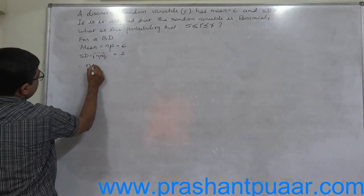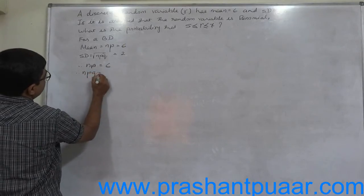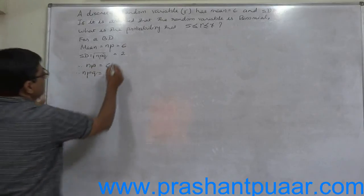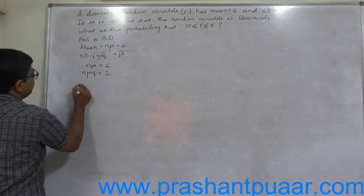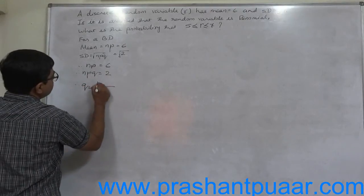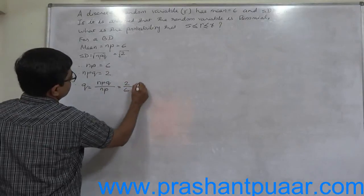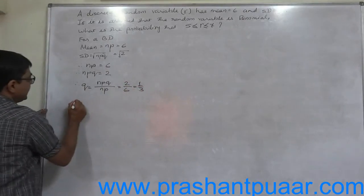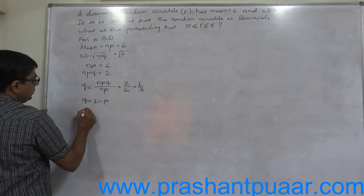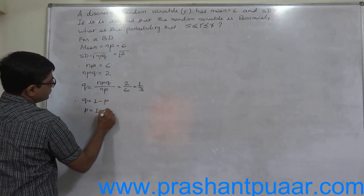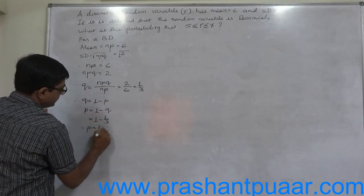So np equals 6 and npq equals 2. √(npq) is √2, so npq must be 2. Now first we can find q. q is npq divided by np, that is 2 by 6, that is 1/3. And q is 1 minus p, so p is also 1 minus q, that is 1 minus 1/3. Therefore p equals 2/3.